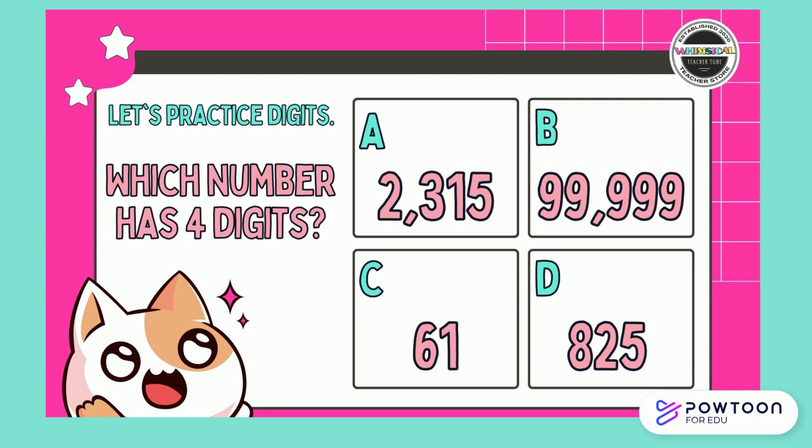Let's practice digits. Which number has 4 digits? Think, then respond. That's correct — 2315 has 4 digits.